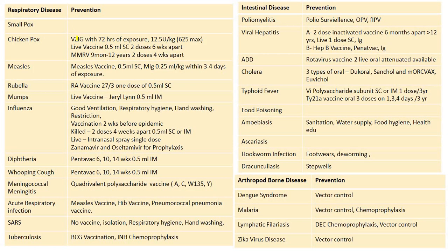Prevention — chickenpox: varicella-zoster immunoglobulin within 72 hours of exposure, 12.5 units per kilogram, maximum 625 units. Live vaccine 0.5 ml subcutaneous, two doses six weeks apart. Along with MMR, varicella is also given as MMRV in the ninth month, and between 9 months to 12 years, two doses four weeks apart.